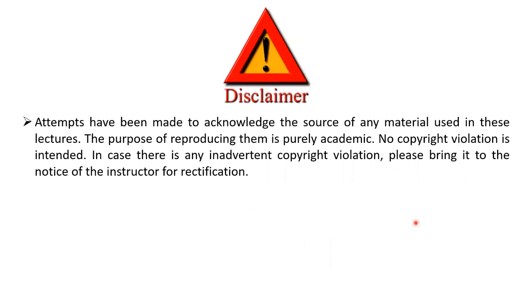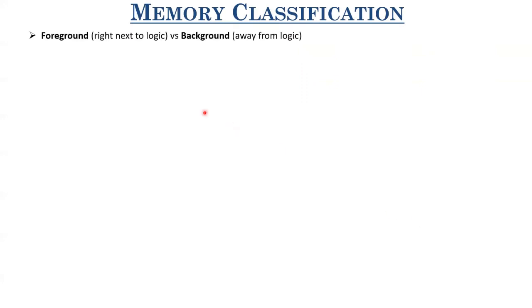Before going to the organization of large memory arrays, let us look at some other memory classifications apart from the ones in the previous lectures. We have a classification known as foreground versus background. Foreground memories are those memory elements which are right next to the logic block or the processing core — examples are registers or cache memory. Background memories are those which are away from the logic or off-chip memory, such as DRAM, SSDs, HDDs, or flash memories.